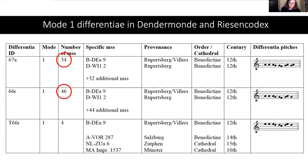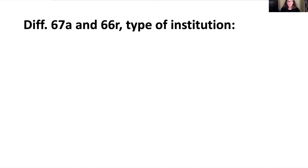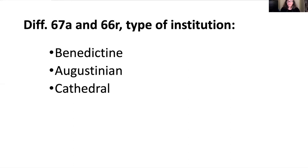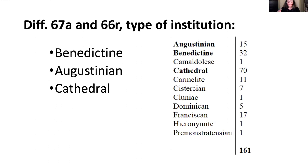If we assess the other manuscripts that use these two differentiae by type of institution, we get an interesting result: they are found not only in Dendermonde and the Riesen Codex, but in other Benedictine monasteries, Augustinian monasteries, and cathedrals. It's a little surprising that there are no Cistercian manuscripts in this grouping — in fact, none of the differentiae used in Dendermonde and the Riesen Codex are found in any of the seven Cistercian manuscripts in the database.